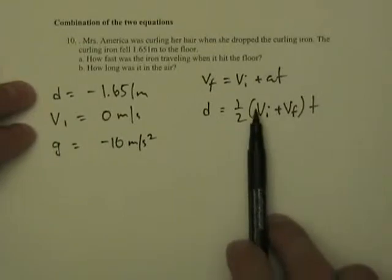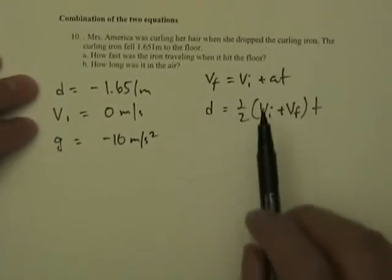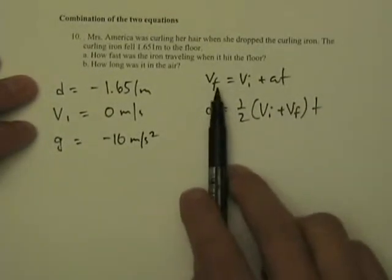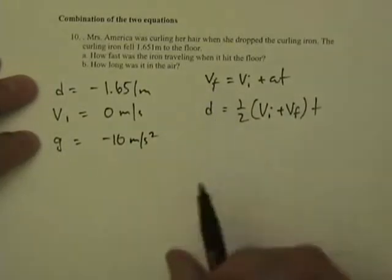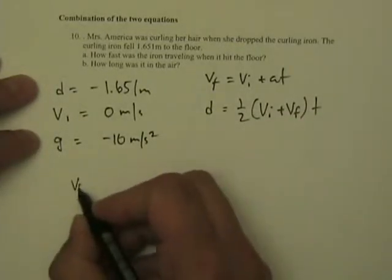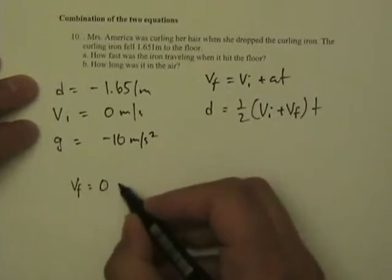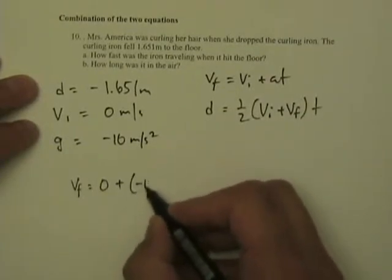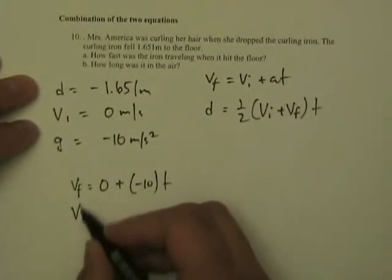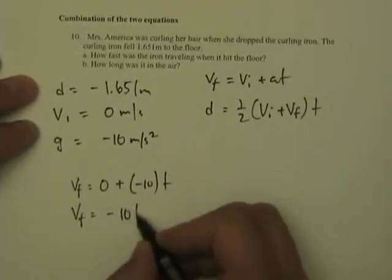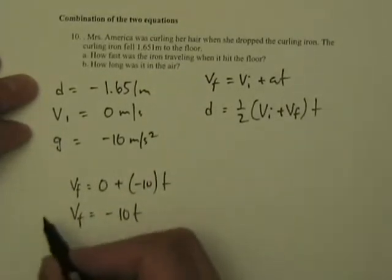Well let's see here, it's gonna be tricky. I'm gonna take my values that I have for this first one. VF I don't know, VI is zero plus minus 10 T, so that's VF equals minus 10 T. Okay that's gonna be my first equation.